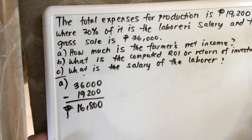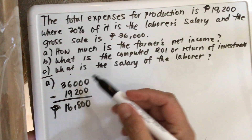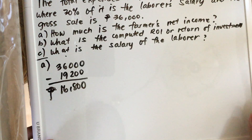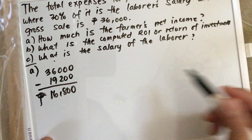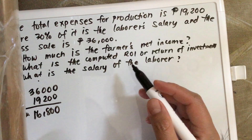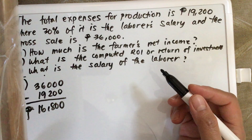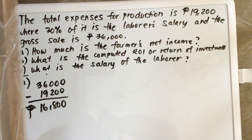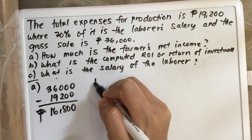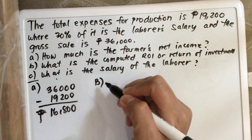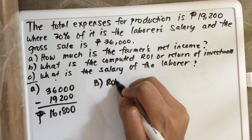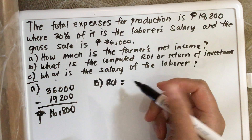So 16,800 pesos is the answer for A. Now for the next one — what is the computed ROI? The formula for ROI: ROI is equal to net income over the cost of investment.